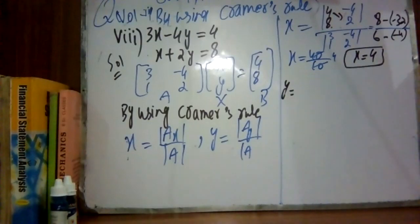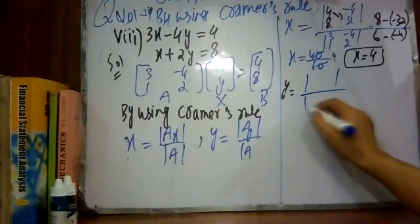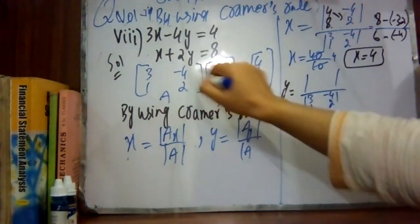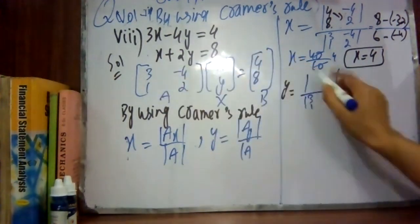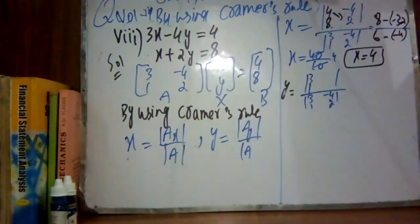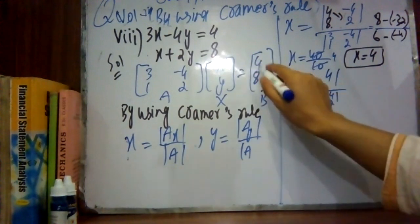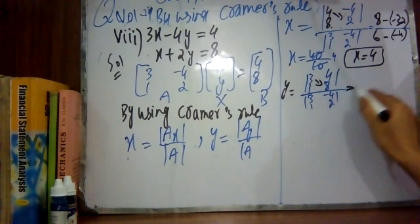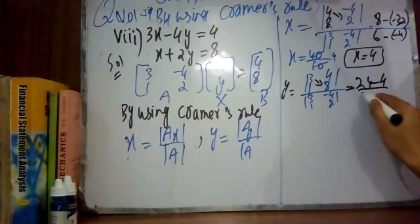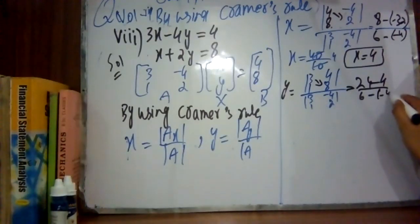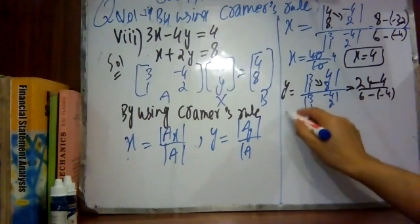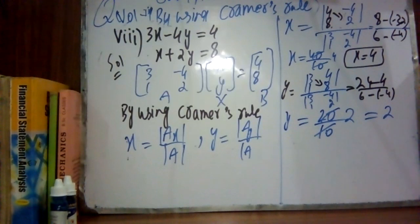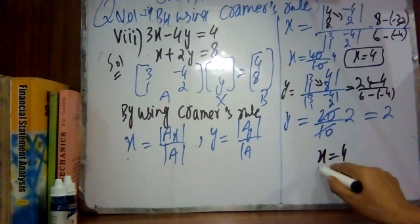Now let's find the value of y: determinant of Ay divided by determinant of A. Matrix A has 3, 1, minus 4 and 2. When we write Ay, we do not write y's coefficients; the first column remains as is — 3 and 1 — and the second column is replaced with constant terms 4 and 8. Cross multiplication: 3 times 8 equals 24, minus 1 times 4 equals 4, so 24 minus 4 equals 20. Denominator: minus minus plus, 6 plus 4 equals 10. So y equals 20 divided by 10, y equals 2. Hence x equals 4 and y equals 2. This is the final answer.